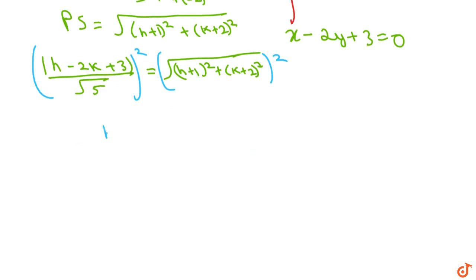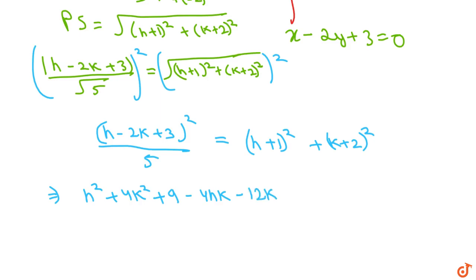This is (h - 2k + 3)² / 5 is equal to (h + 1)² + (k + 2)². Okay? If we expand it, this is h² + 4k² + 9 - 4hk - 12k + 6h upon 5.